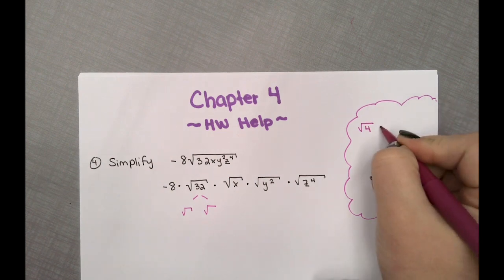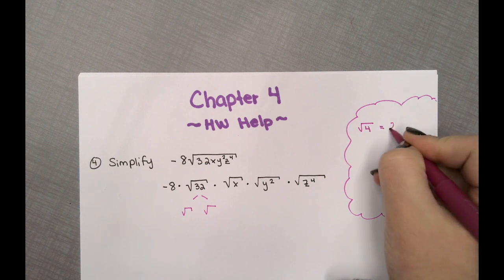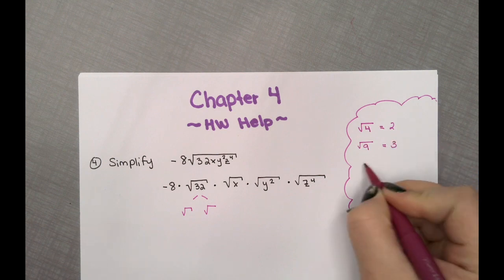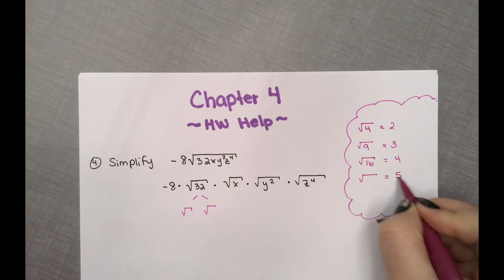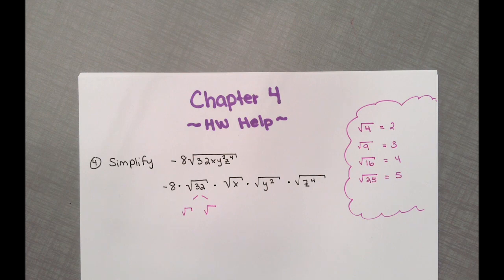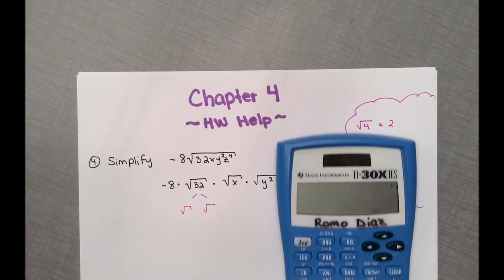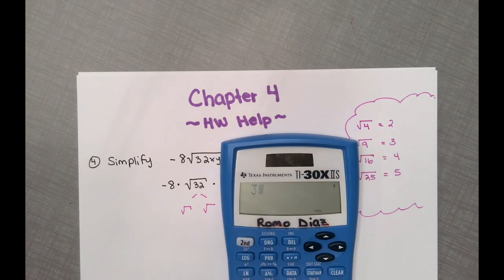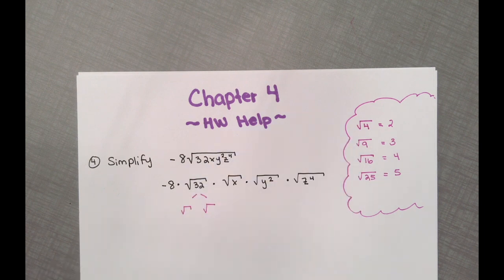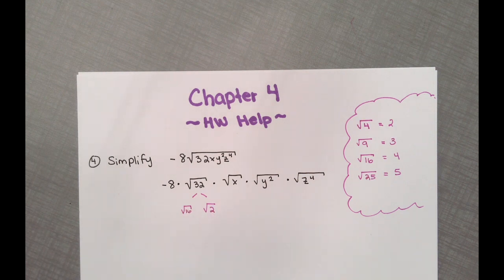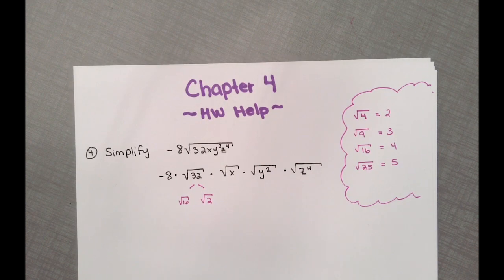Another perfect square is 9 because the square root of 9 is 3. We can write these out and see which perfect square is a factor of 32. If you'd like to use a calculator, you can. 32 divided by 25 doesn't give us a pretty answer — it gives us a decimal, so we don't want that. 32 divided by 16 does give us a pretty answer. You want to choose the largest factor — don't choose something like 4 if the other number can be simplified further.